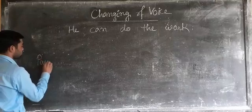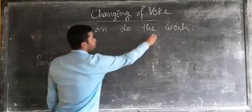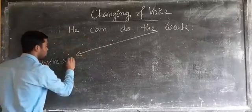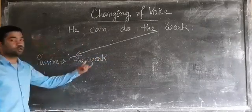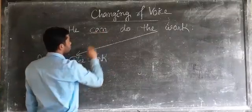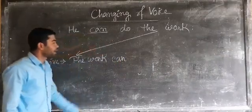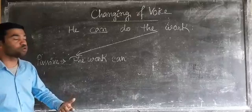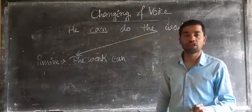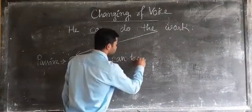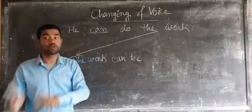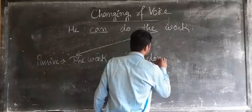Now we have to convert it to passive. The first rule: the object of active voice will be the subject of passive voice. 'The work,' which was the object, is now going to be the subject. Thereafter we need a be-verb. Whatever auxiliary was used in the previous sentence — 'can' was the auxiliary — so we use that. Along with this auxiliary we use the be-verb 'be.' So: 'The work can be.' 'Do' is the main verb; the third form of 'do' is 'done.'